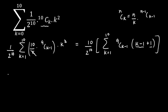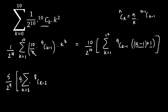So the expression becomes (5/2^9) multiplied by two summations. Applying the formula again to the first part, 9 comes outside and we get 8C(k−2), with k varying from 2 to 10. The second part remains the summation of 9C(k−1), with k varying from 1 to 10.